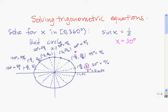If we keep going around, we see that there's another spot where the y-coordinate is 1 half, right here. That angle is also a solution because the sine of that angle is the y-coordinate, which is 1 half. So x equals 30 degrees and x equals 150 degrees are our two solutions if we restrict our interval to 0 to 360 degrees.